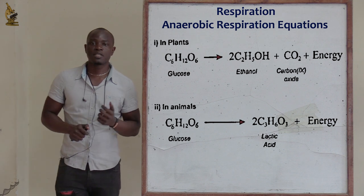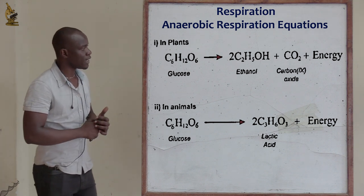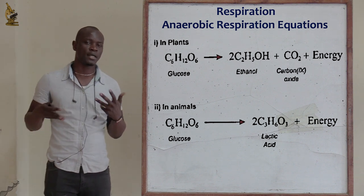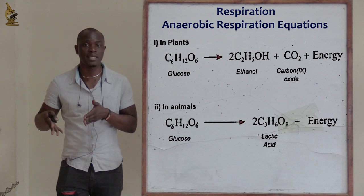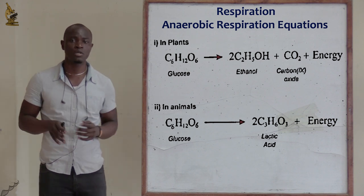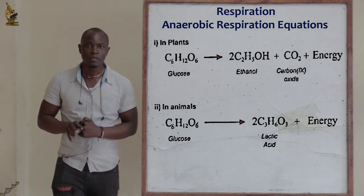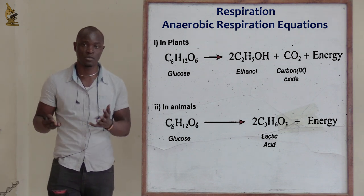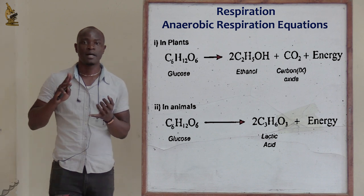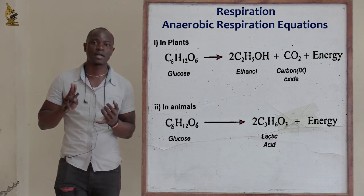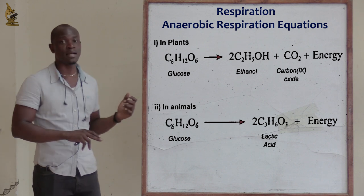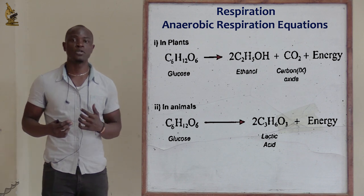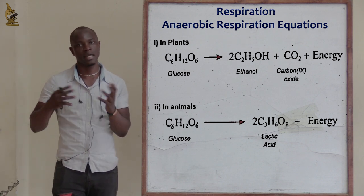This process summarizes anaerobic respiration. In plants, it is somewhat similar to glycolysis, but here we do not form pyruvic acid. For anaerobic respiration in plants, glucose is broken down in the absence of oxygen to form energy and carbon dioxide. In animals, glucose is also incompletely broken down to produce lactic acid and energy.